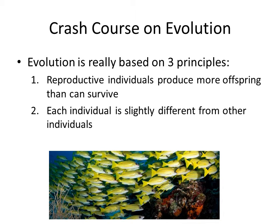The other thing important for evolution is that each individual is slightly different from other individuals. This is quite obvious in humans, though it's not as obvious to our eye in things like fish and insects. But if you go down and spend enough time looking at these things very closely, you'll see very quickly that there are actually individuals and they are quite different from one another.